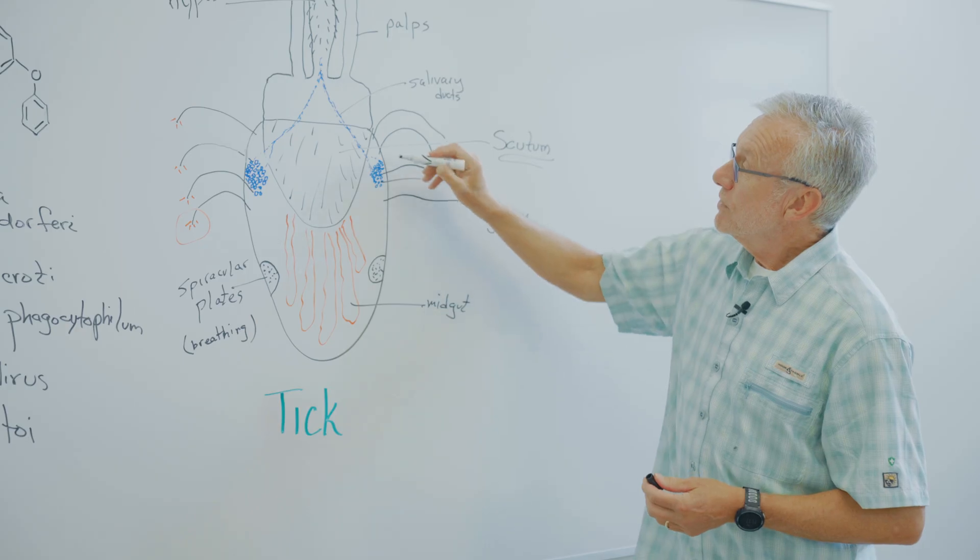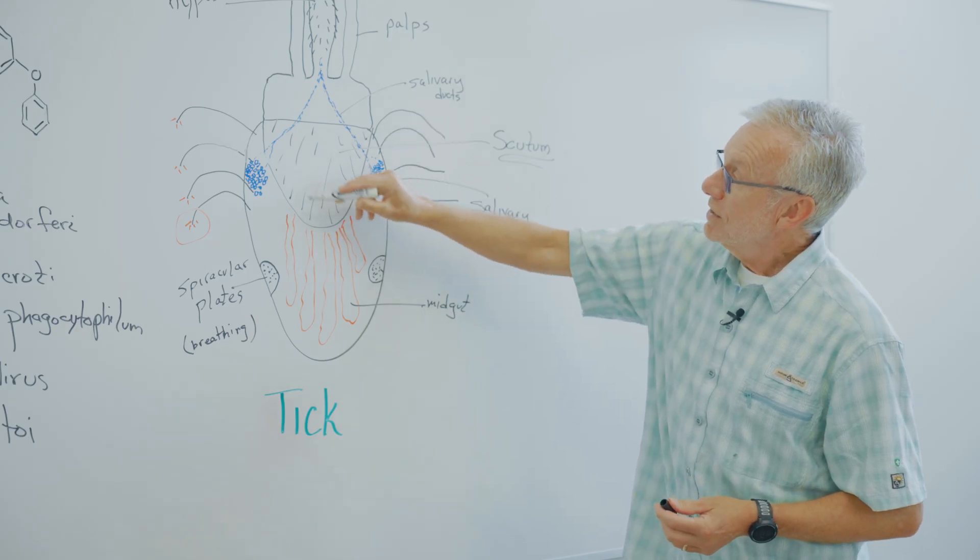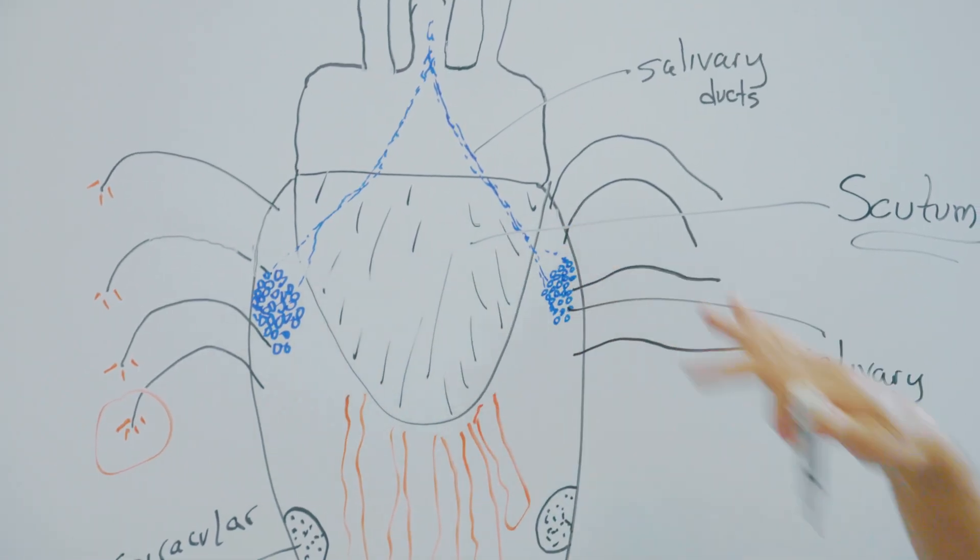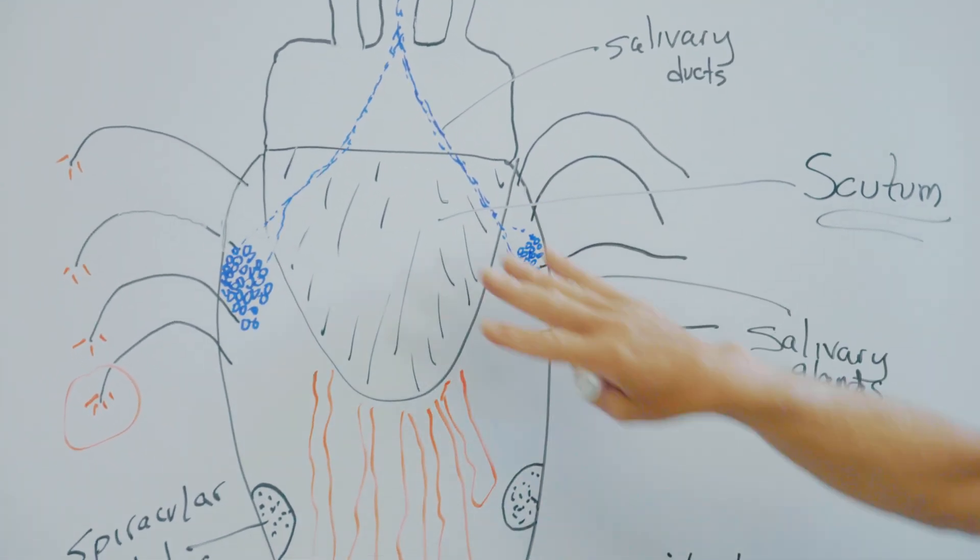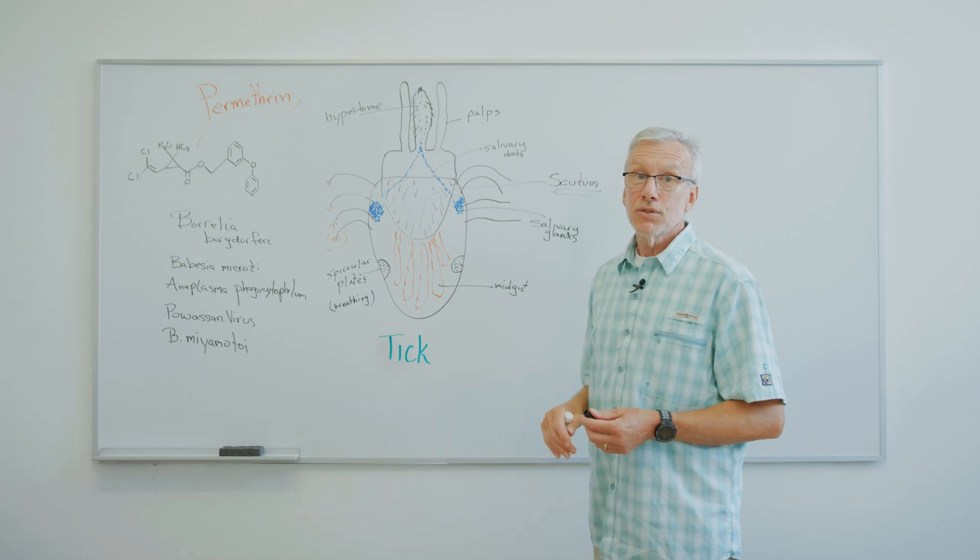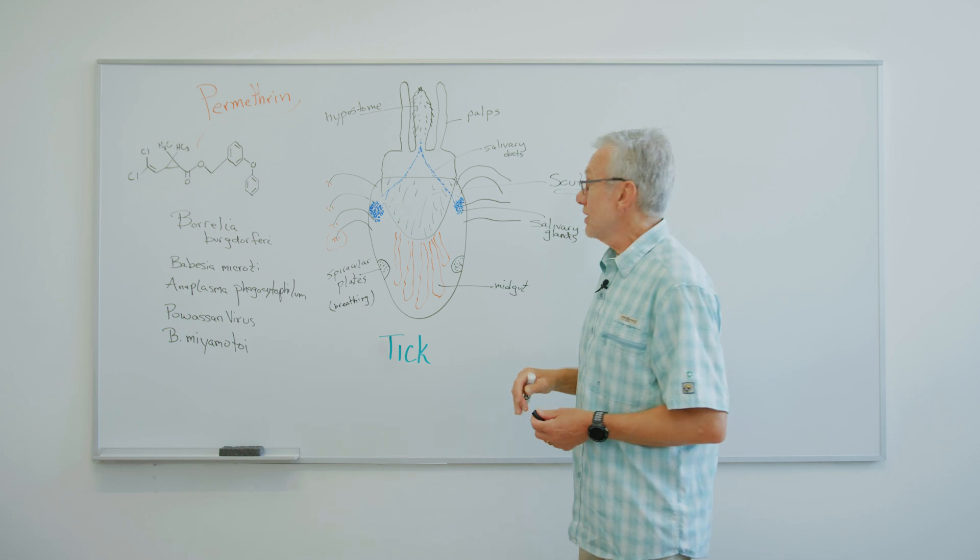I think one of the most important features of the tick is this thing here. It's called the shield. On a female tick, it takes up the first one-third of the tick. On the male, it actually covers the entire tick. You'd like to have a shield if you were going to get scratched and everything as well.